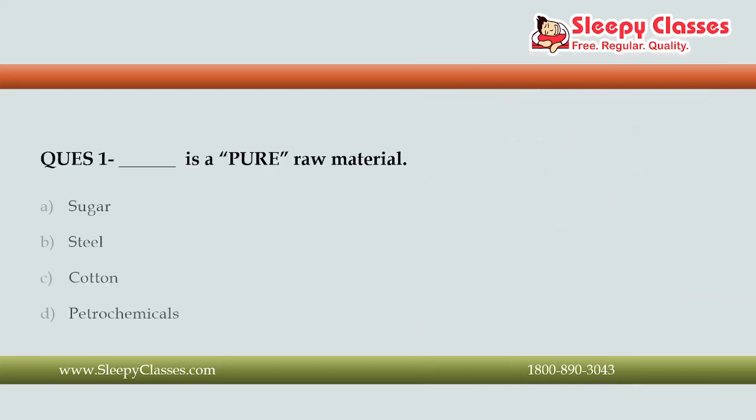The first question is: which of the following is a pure raw material? First, sugar. Second, steel. Third, cotton. And fourth, petrochemicals. The correct answer is Option C, that is cotton.